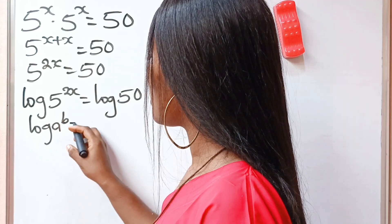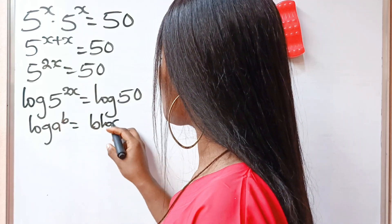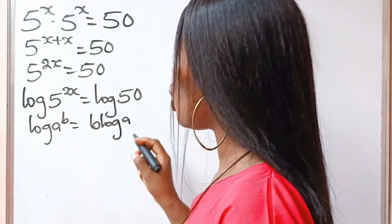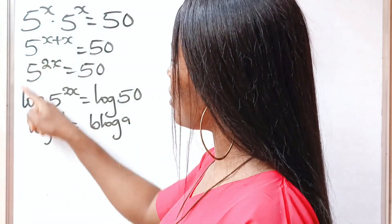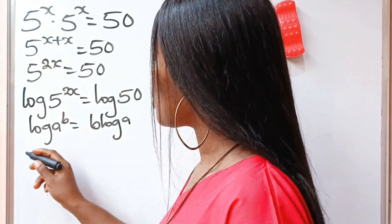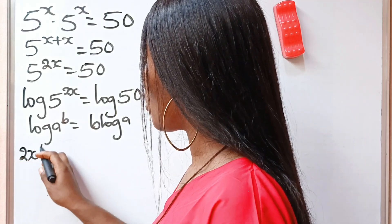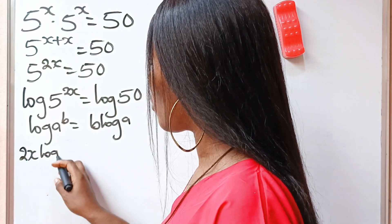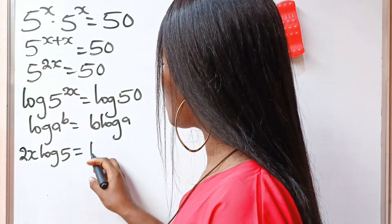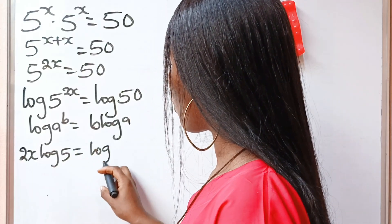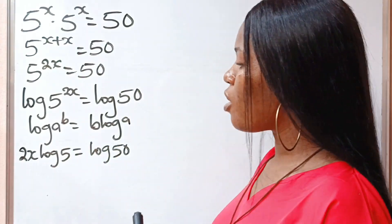Now, when you have log a raised to the power of b, that equals b multiplied by log a. So we can bring the exponent down, and we now have 2x multiplied by log 5 is equal to log 50.